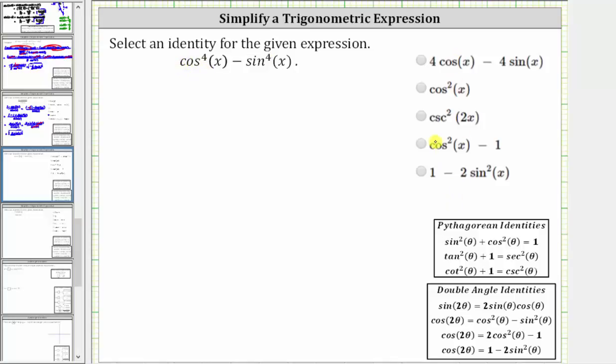Select an identity from the list on the right for the given expression. We are given the expression cos^4(x) - sin^4(x). For the first step, let's factor this expression.